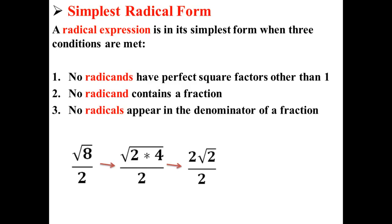We can pull out the 4, so now we have 2 square root of 2 divided by 2. And finally, we can cancel out the 2's to simply get square root of 2. Now, our radical expression has been simplified to simplest radical form.